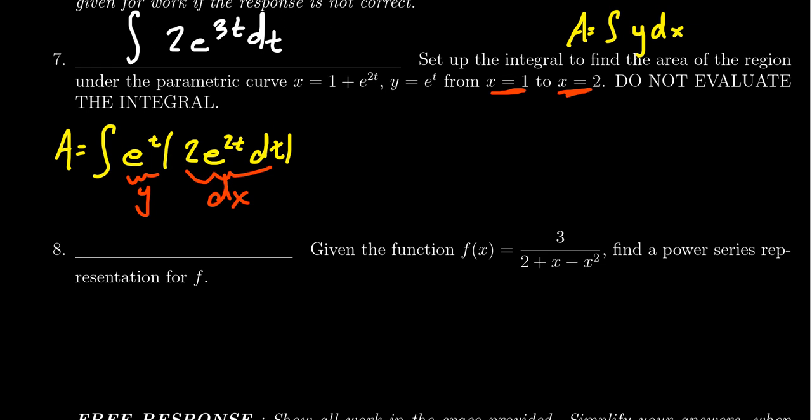As x goes from 1 to 2, what happens to t? When x equals 2, we solve 2 = 1 + e^(2t). Subtracting 1 from both sides gives 1 = e^(2t). Taking the natural log of both sides, 0 = 2t, therefore t = 0. That's the upper bound.